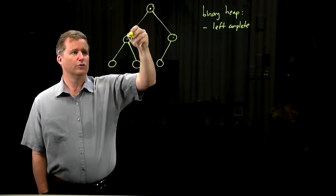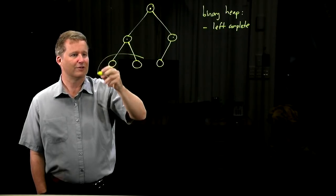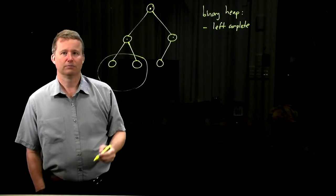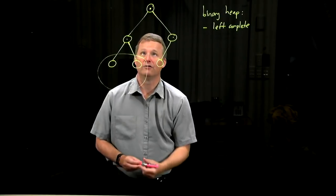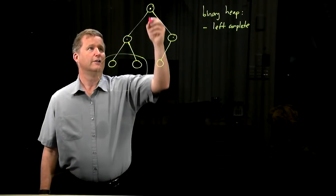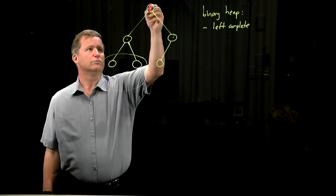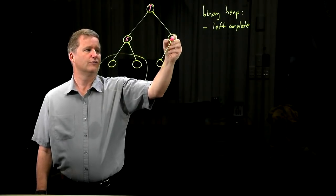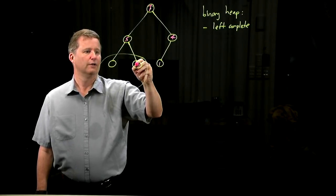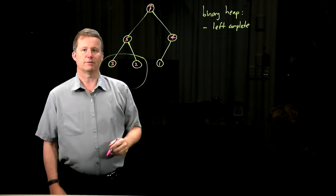Every node has a value which is greater than or equal to everything below it. So for example, for this one, if we're using just ordinary integers as priorities, and the larger ones are higher priority, we could have a 7, 5, 4, 1, 3, 2, something like that.